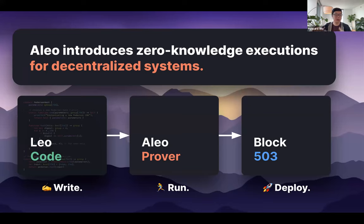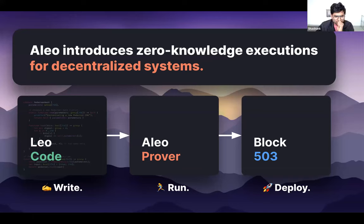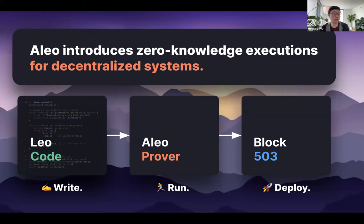We're developing a language called Leo which allows you to write applications. The goal is to provide syntax that looks and feels like TypeScript or Rust, providing a safe environment for developers who may not know ZK well, and also for those who do, letting them leverage the language to optimize constraint counts and performance based on their domain-specific knowledge. Once the application is built and compiled, the goal is to execute it on provers. Aleo is a network that facilitates provers, so the goal is to run those applications in real time, deploy them, host them, and store them on-chain.